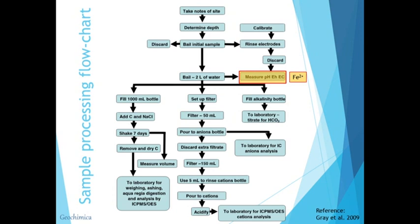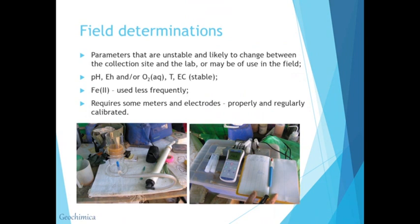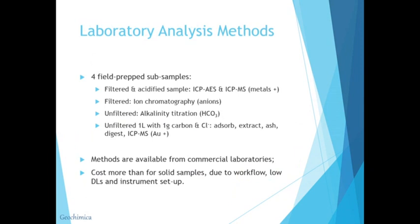Some workers also look at reduced iron. These are parameters which are not particularly stable and may change from where you've collected your sample at depth to when it reaches the laboratory. Sample preparation is about preserving your sample and stabilizing it so that you can get it off to the lab for analysis. Field determinations cover parameters that are unstable and likely to change between the collection site and the lab — things like electrical conductivity or salinity, which you can use to determine if you've moved into a different groundwater regime or are sampling a different aquifer. pH, redox potential, dissolved oxygen, temperature, and electrical conductivity all require meters, electrodes, and knowledge of how to use them properly.